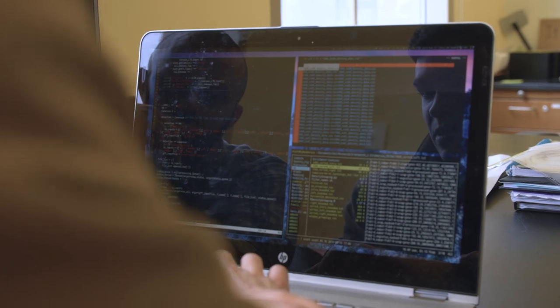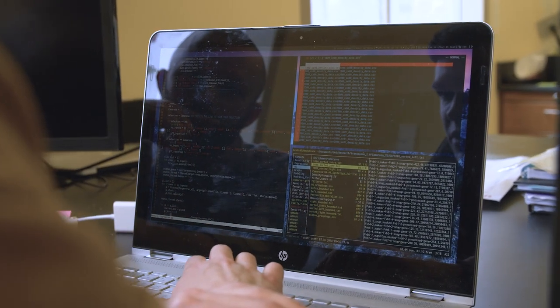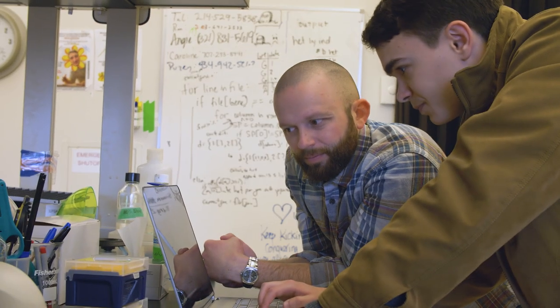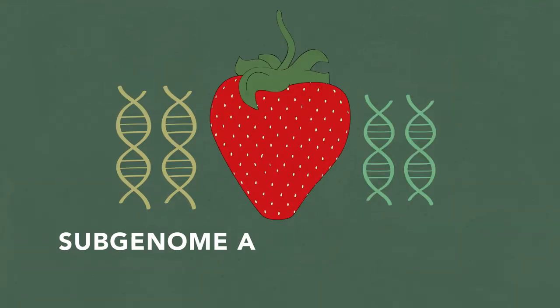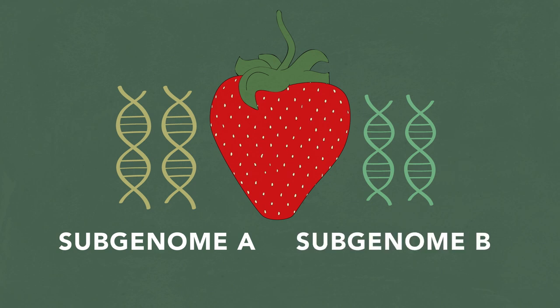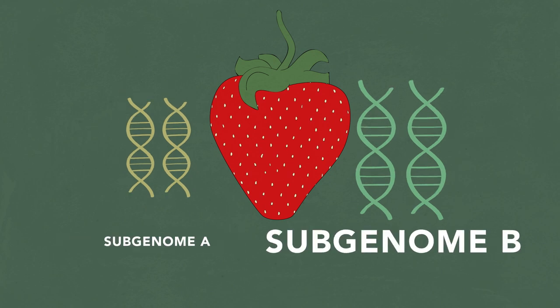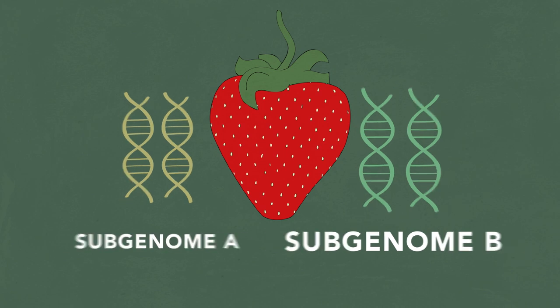We wanted to ask: within these two subgenomes, how does the plant choose which recipe to use? We measured expression for tens of thousands of genes within these hybrid plants, mapped it to the genome, and asked how many gene pathways are expressed from subgenome A and how many are expressed from subgenome B. What we found is that there's a very clear dominant genome within this hybrid individual.